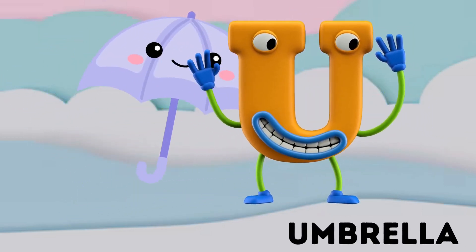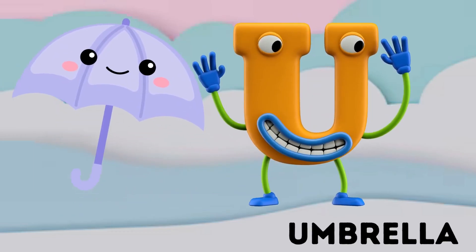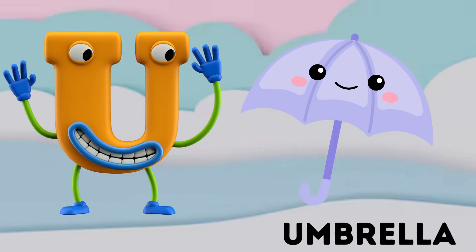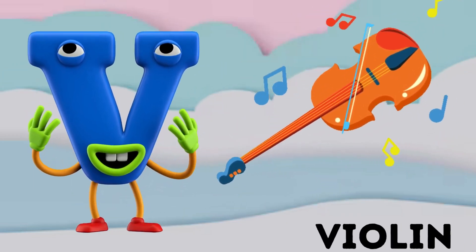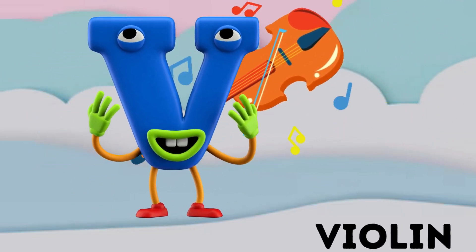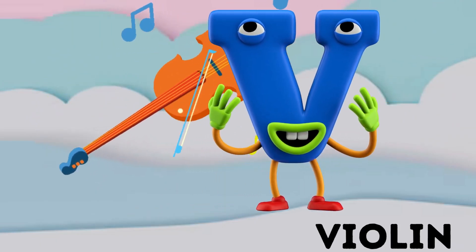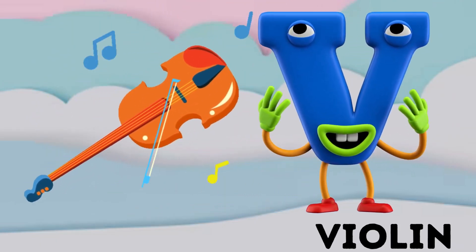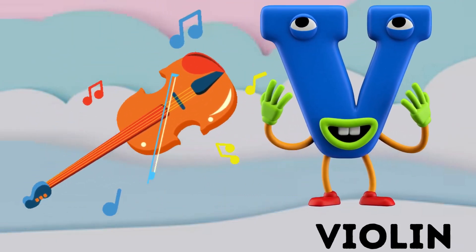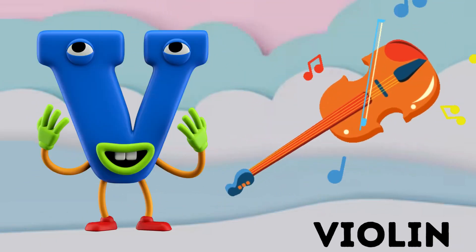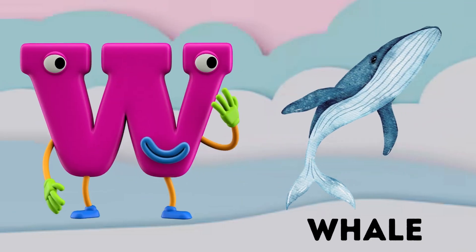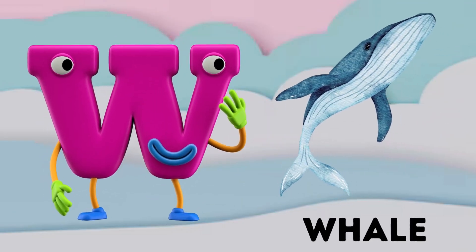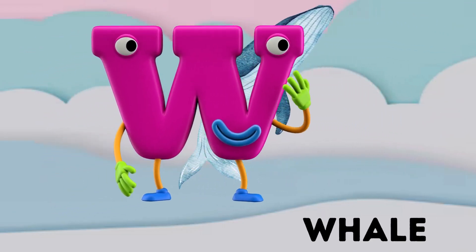U Umbrella, U Umbrella. V is for Violin. V V Violin, V Violin. W is for Wave. W W Wave.